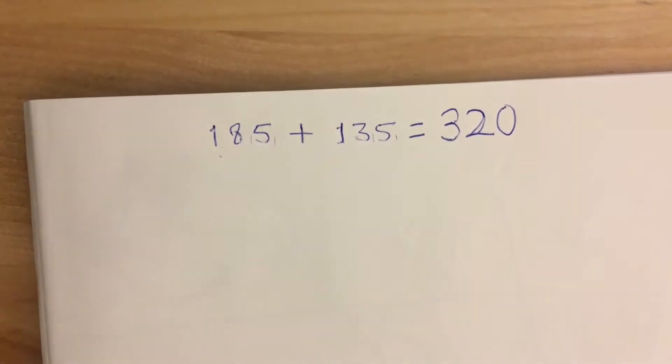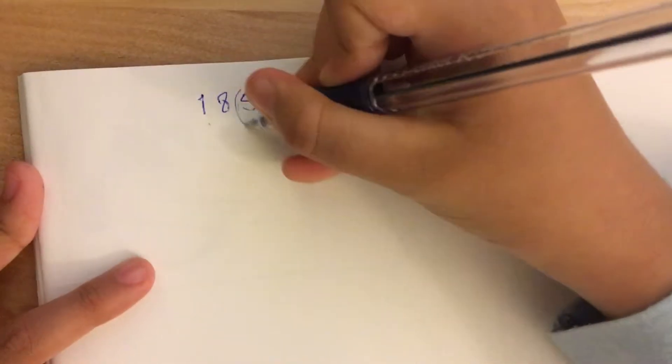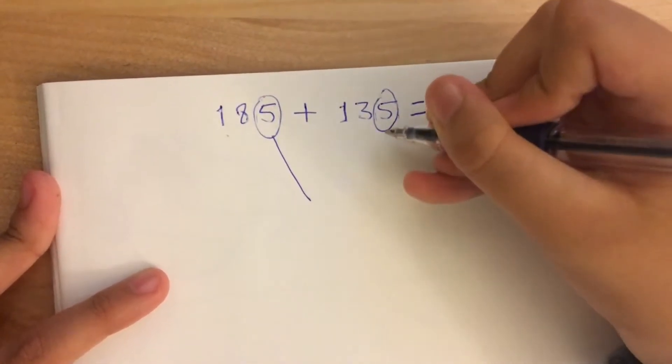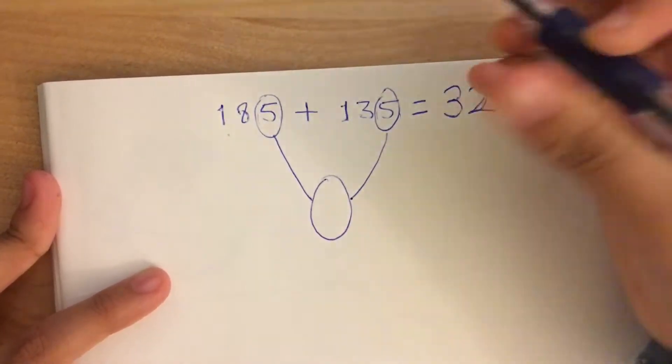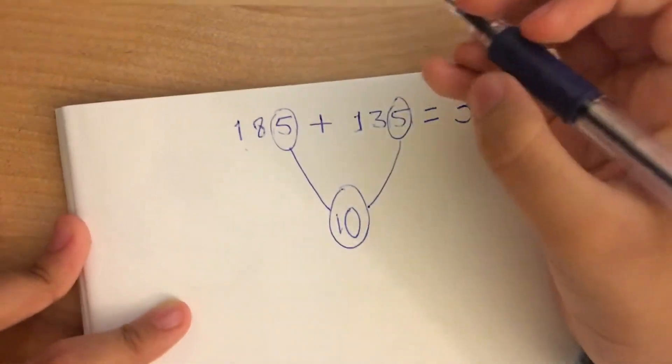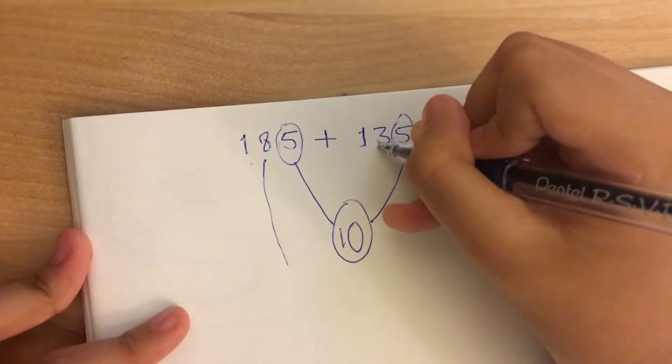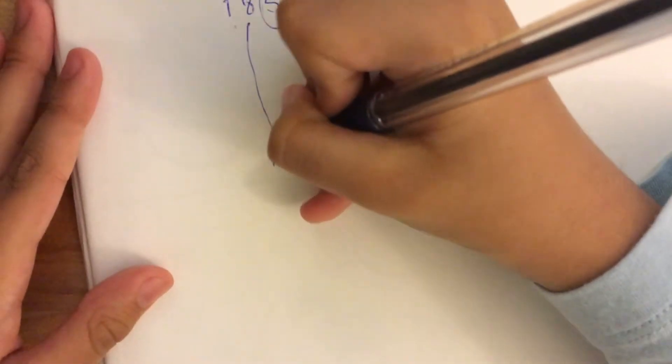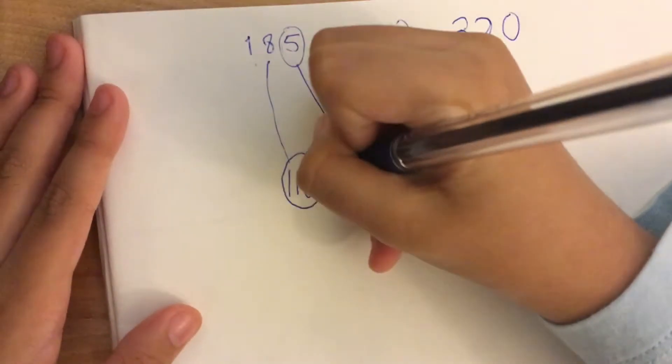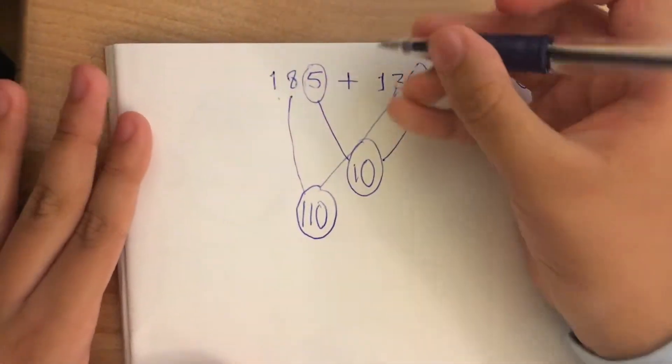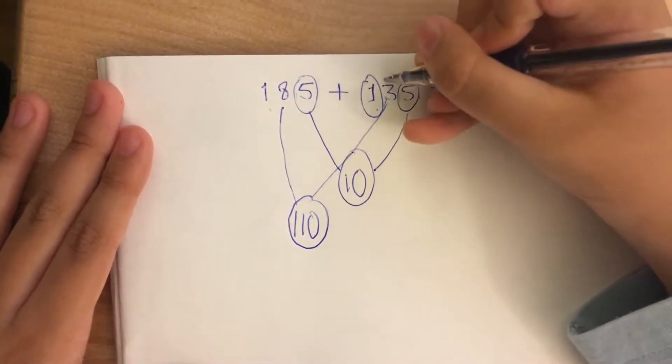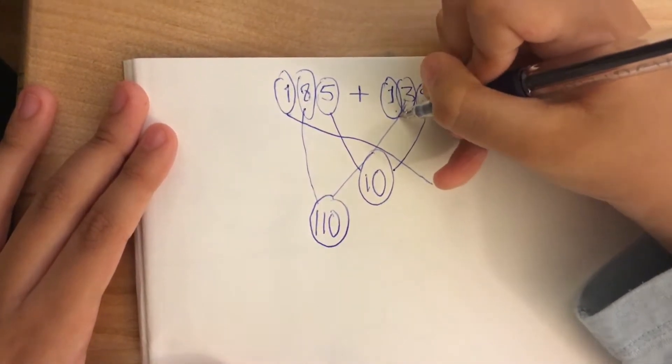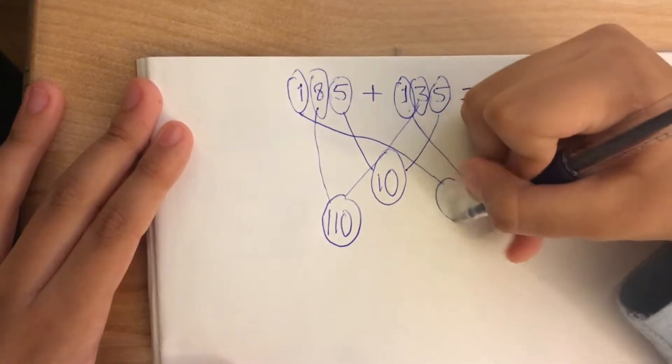Okay, so let's take this 5 and this other 5, put it together and you make 10. Then put 80 and 30 together, you get 110. Then you put 100 next to 100 and you get 200.